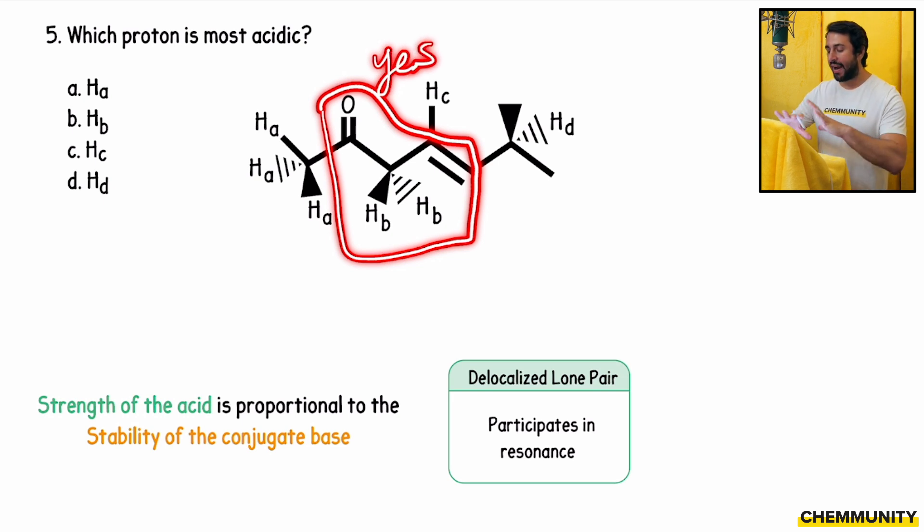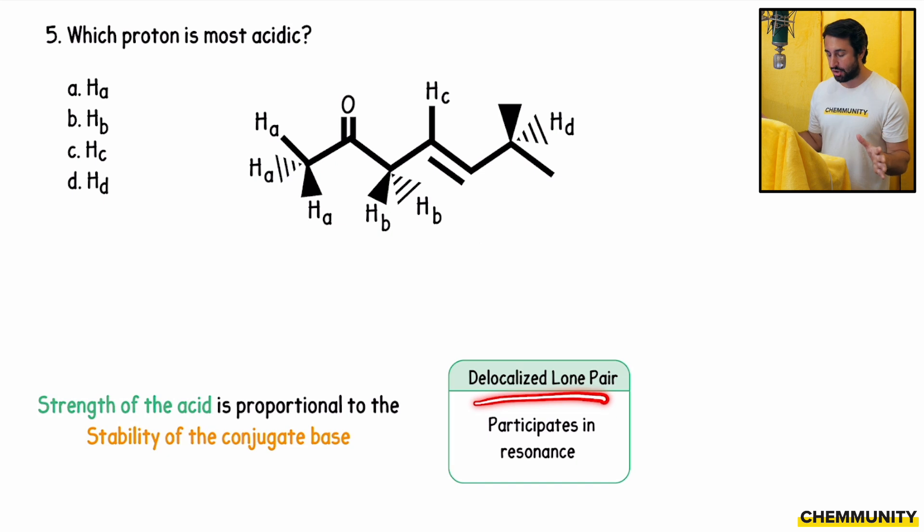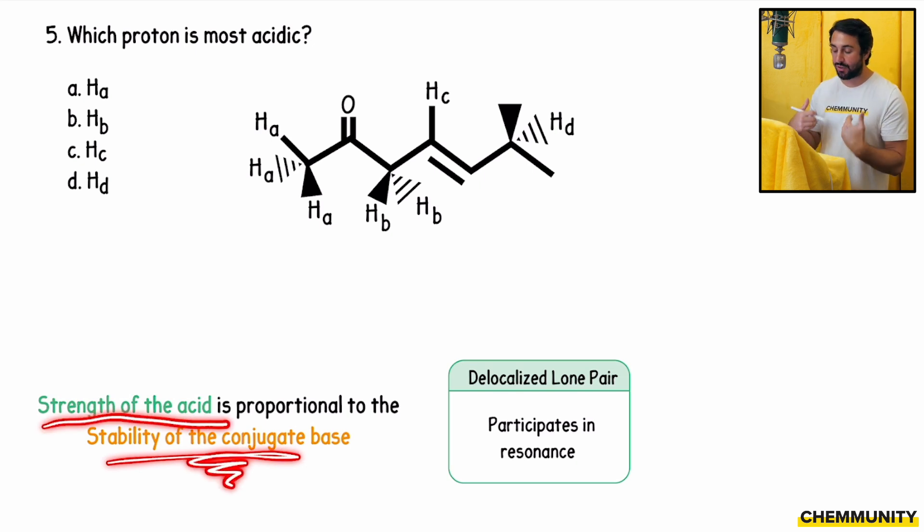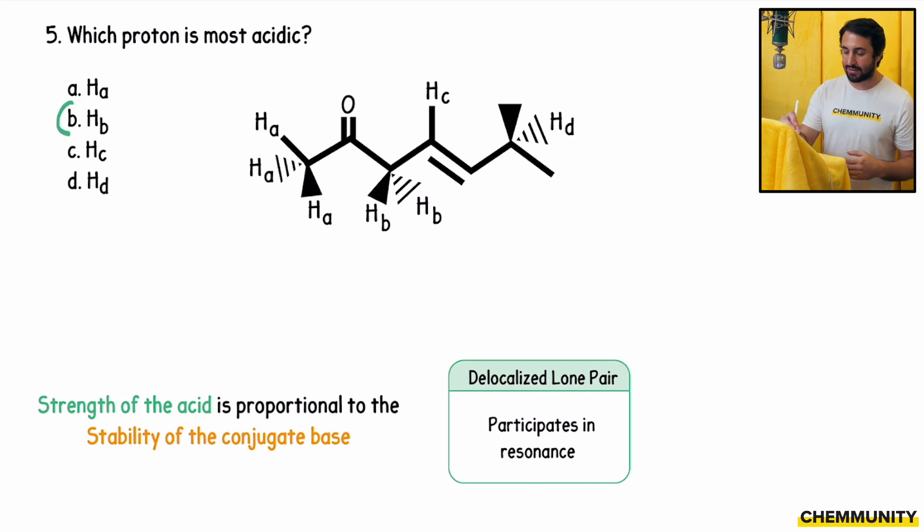Remember, the greater the degree of delocalization, the more stable that anionic species and the more stable the resulting conjugate base, the more acidic the acid must have been. The more stable the thing that you get, the more easily that proton can be extracted in the first place, which correlates with acid strength. So HB is going to be the most acidic proton. These two, the two HBs together are the most acidic protons on that molecule.